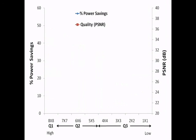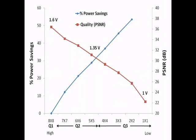Utilizing the reduction of cycles achieved by the reduced logic computation and memory accesses, we estimated the scaled-down VDD while keeping the total computation time constant. The resulting power-quality trade-offs under the various modes are shown in this graph. As it can be seen, the user has the ability to reduce power by 30% under Q2 mode at 1.35 volts, and save up to 54% power by reducing VDD to 1 volt in the Q3 mode.